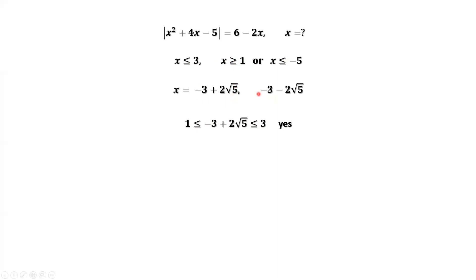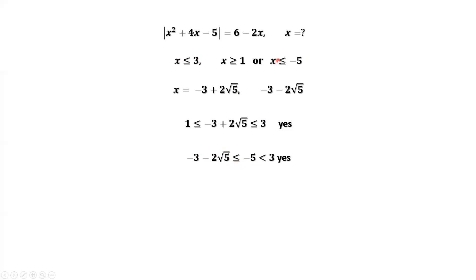Now we need to check the second answer: negative 3 minus 2 root 5, which is negative — certainly less than or equal to 3, that's true. And this is also less than or equal to negative 5, so this condition is also true. Therefore, the second solution is also a real solution.